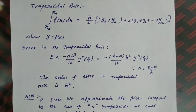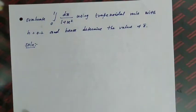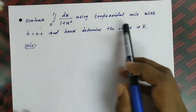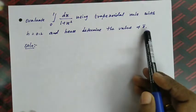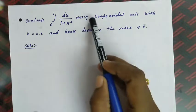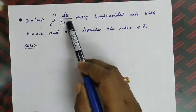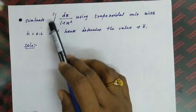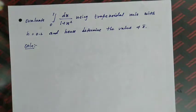We have to remember all these things when doing problems. Now we will do the problems. The first question is: evaluate the integral from 0 to 1 of dx/(1+x²) using the trapezoidal rule with h = 0.2, and hence determine the value of pi. This question has two parts: first evaluate the integral, then find the value of pi.